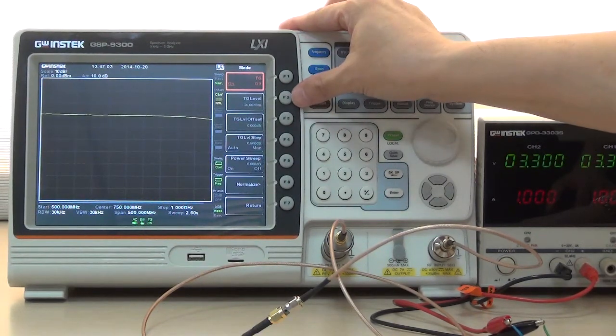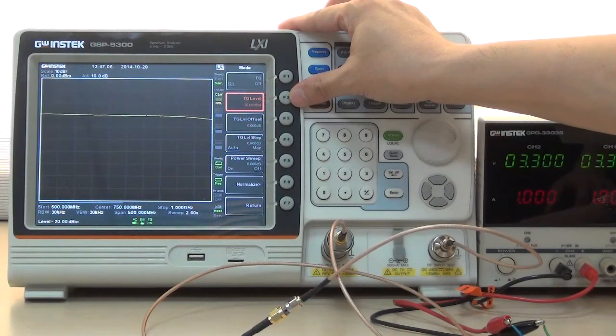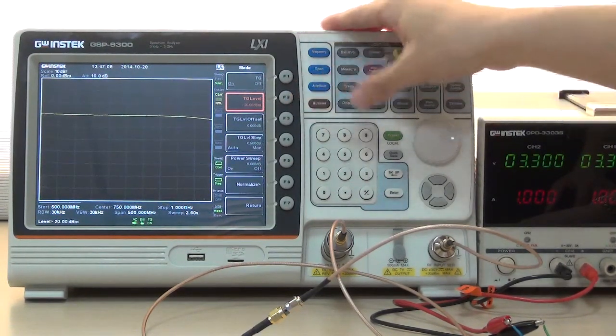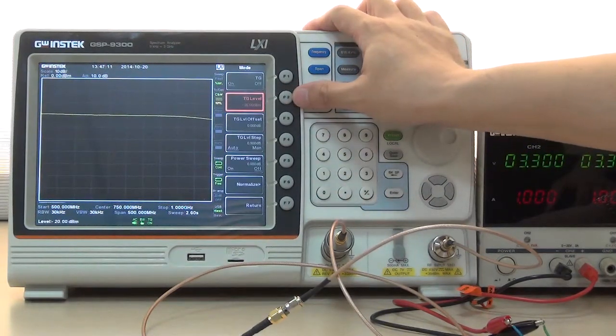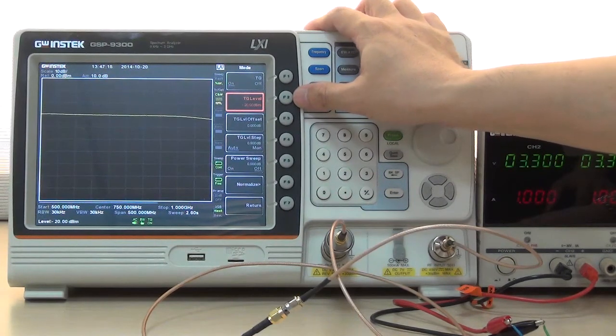Next, press F2 Tracking Generator level and input minus 20 dBm to set Output Power as minus 20 dBm.